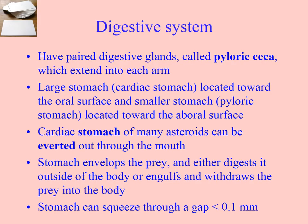The large cardiac stomach is on the oral surface — that's the one that goes out of the body. The smaller pyloric stomach is above it. Once they've started digesting things outside the body, they can slurp some of the liquids up into the pyloric stomach and digest things internally, which is more efficient.